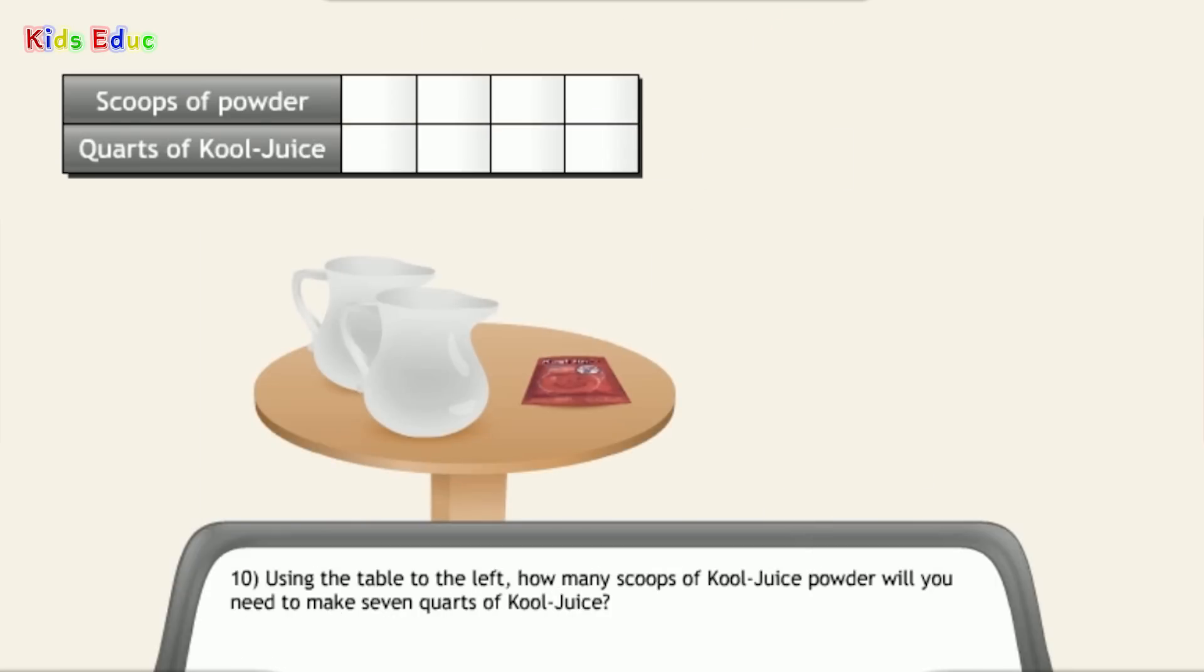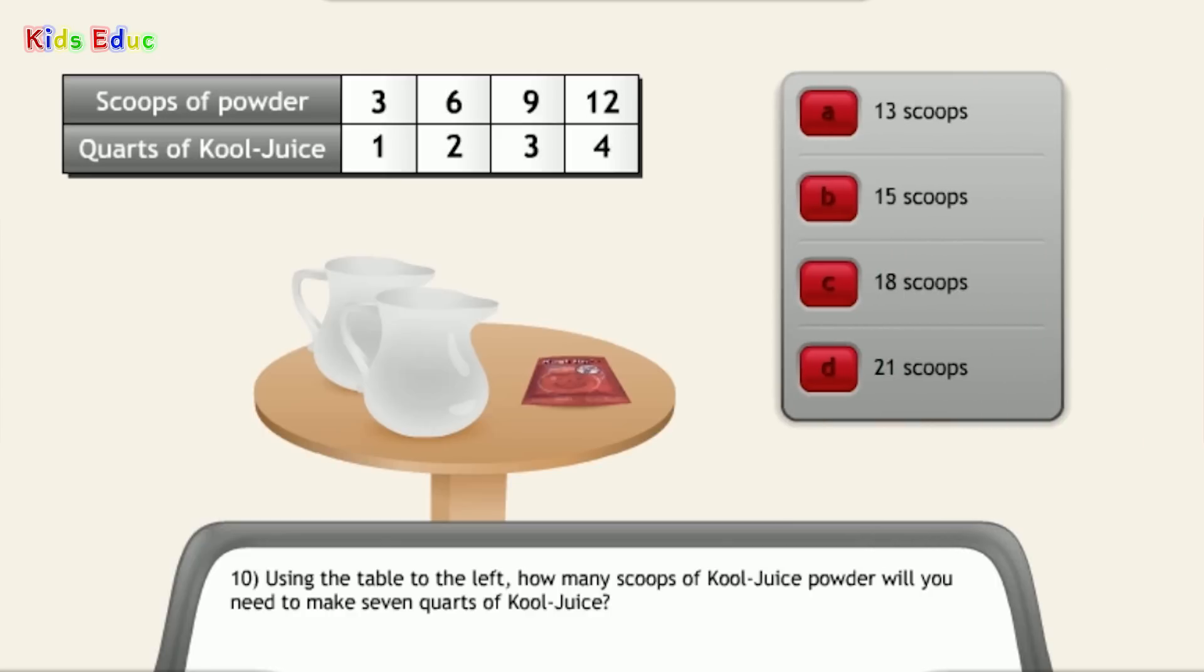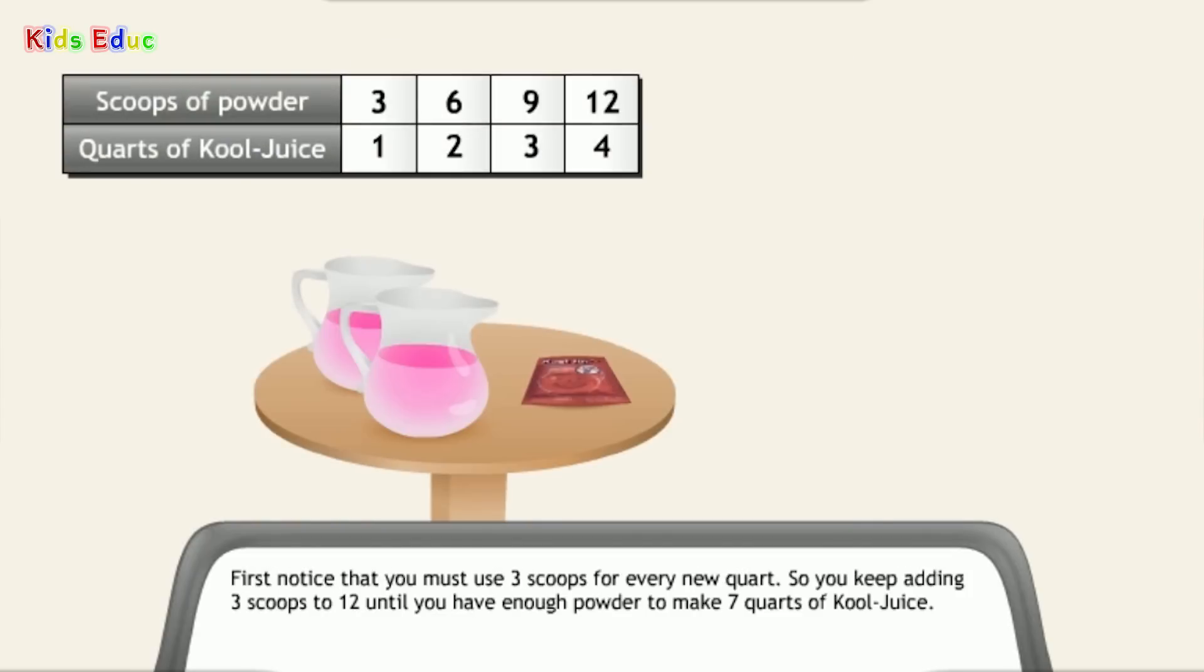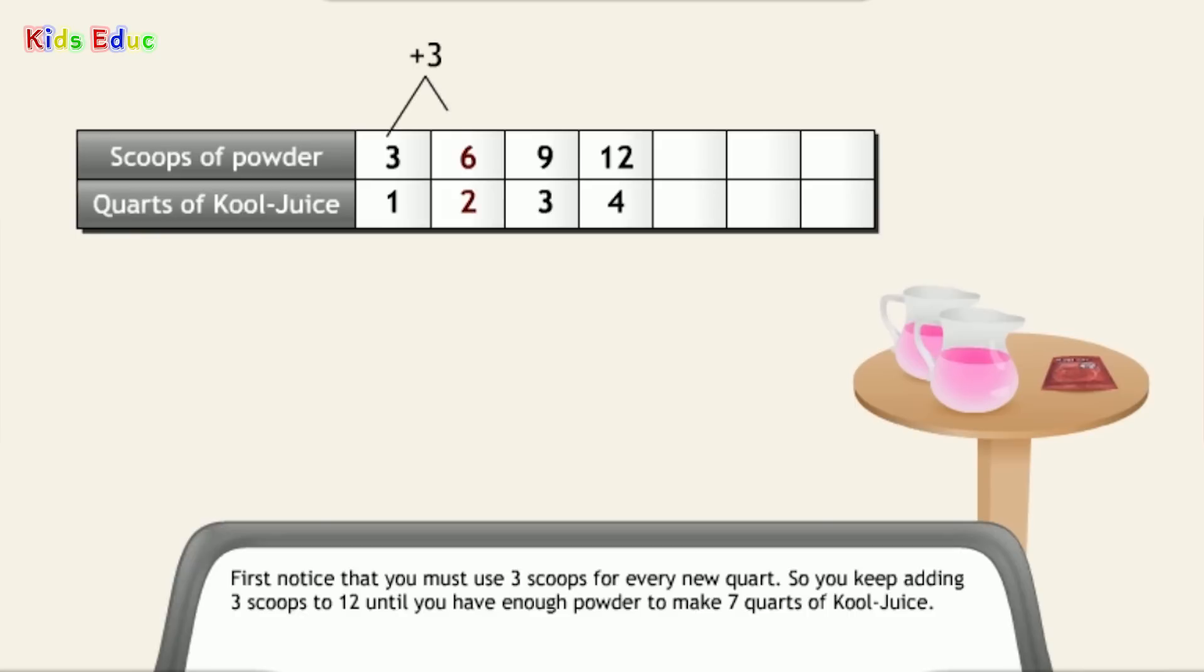Number 10. Using the table to the left, how many scoops of cool juice powder will you need to make 7 quarts of cool juice? 21 scoops. That's correct. First, notice that you must use 3 scoops for every new quart. So, you keep adding 3 scoops to 12 until you have enough powder to make 7 quarts of cool juice.